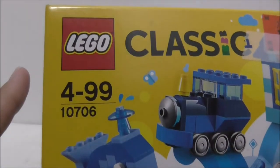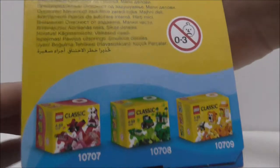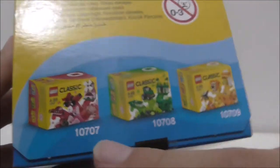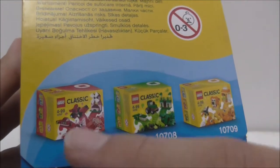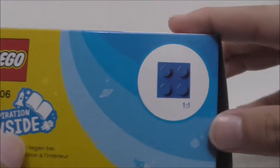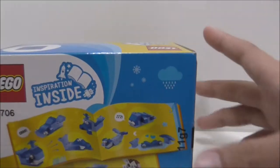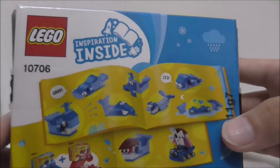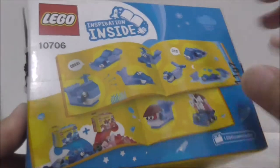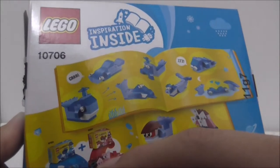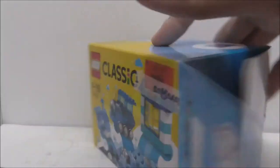This is set 10706. On the side of the box you can see it shows you the other boxes - the red one, green and yellow. On the top here you can see this brick, and the back shows you the instructions and you can combine with the red creativity box.